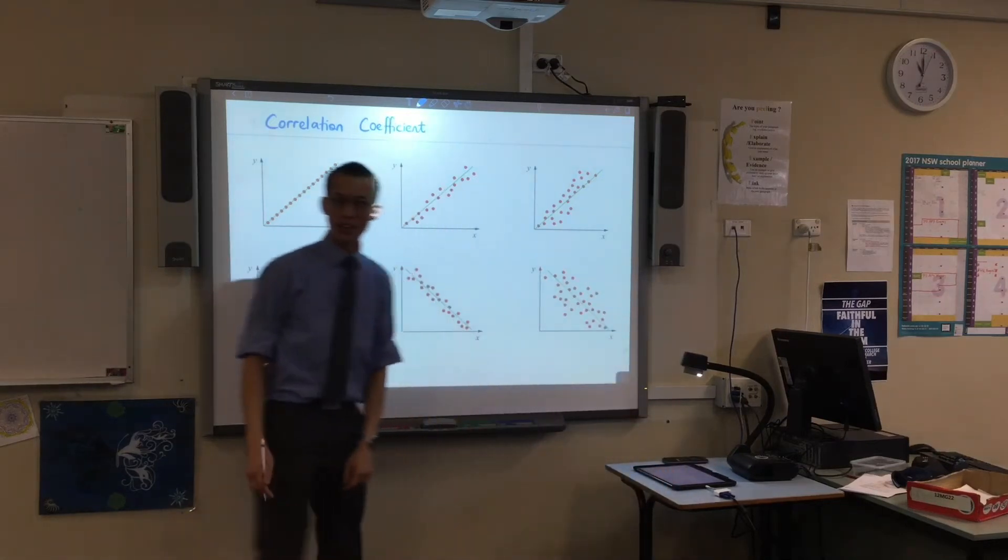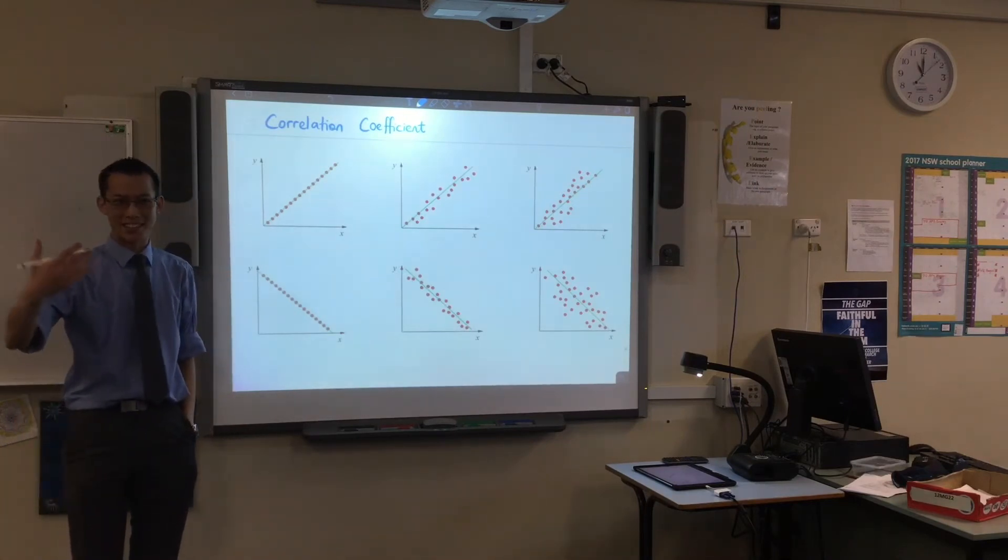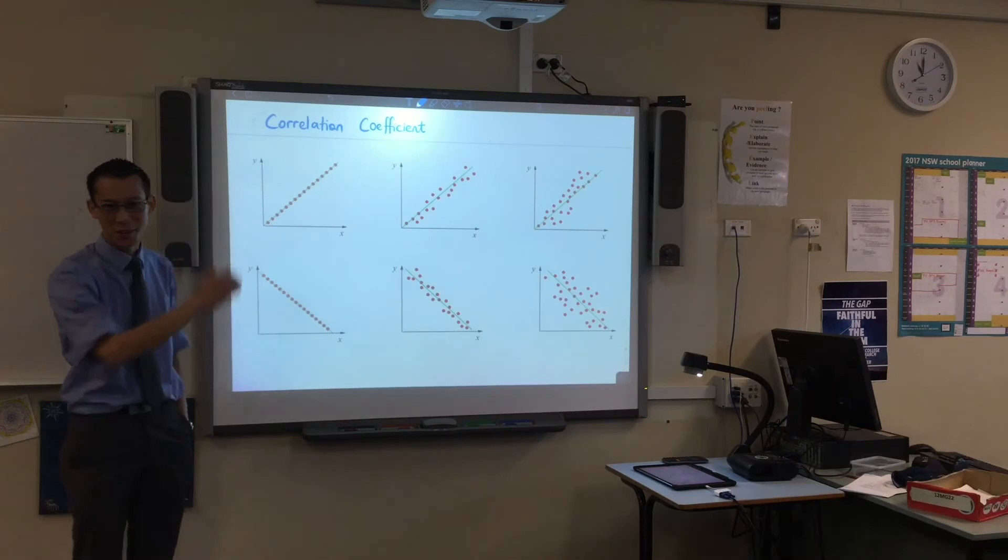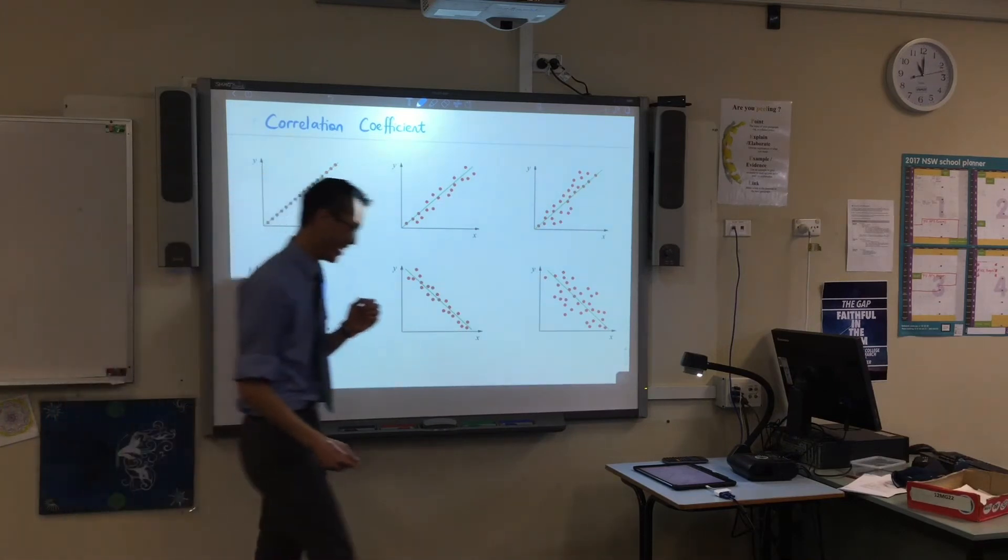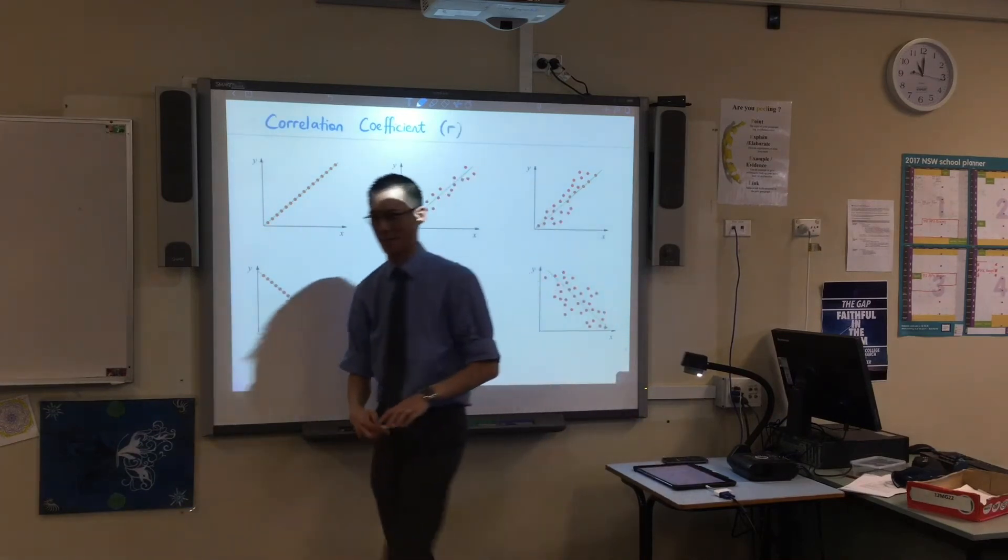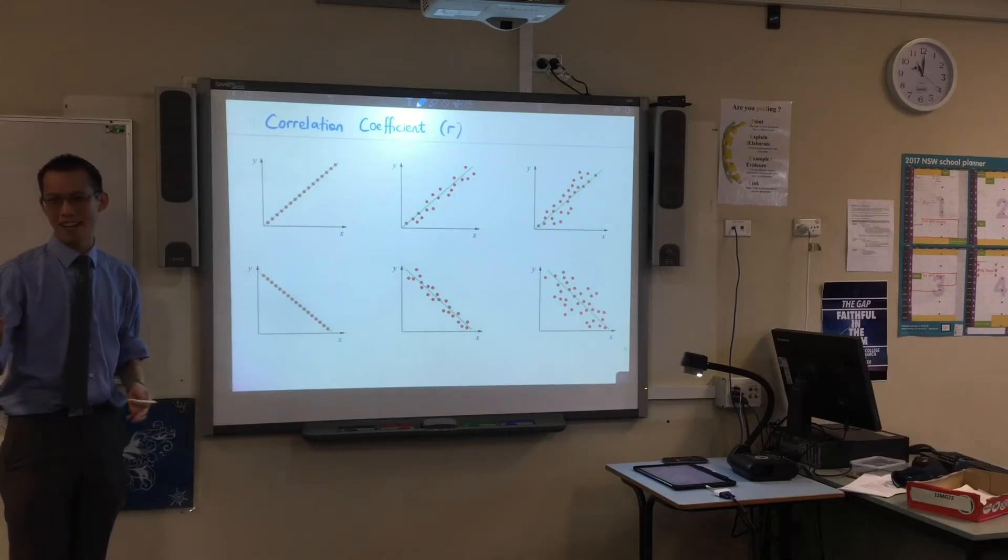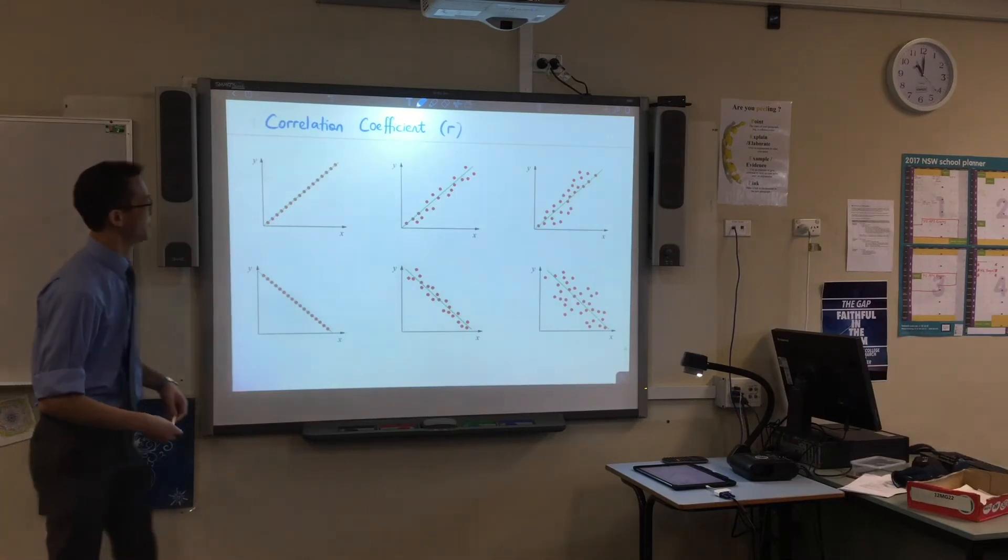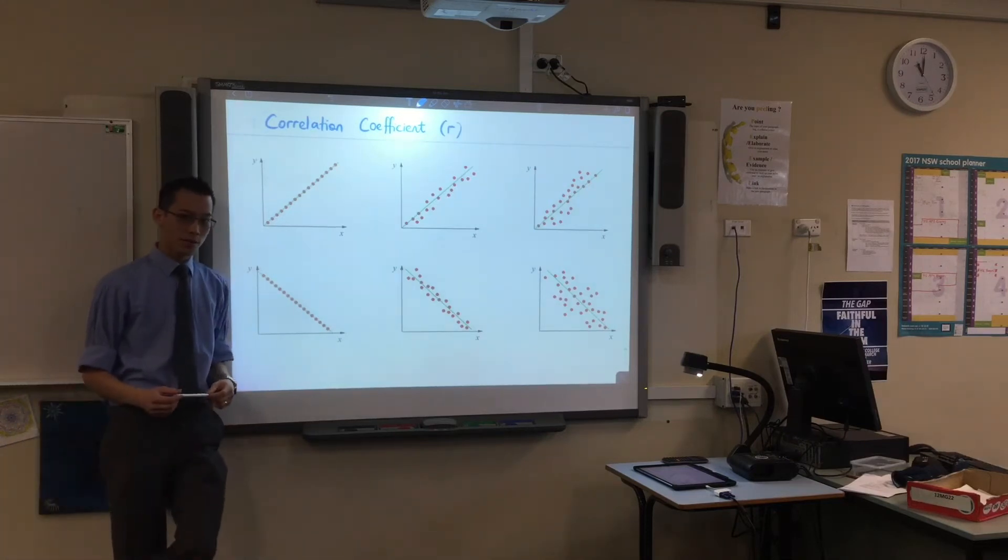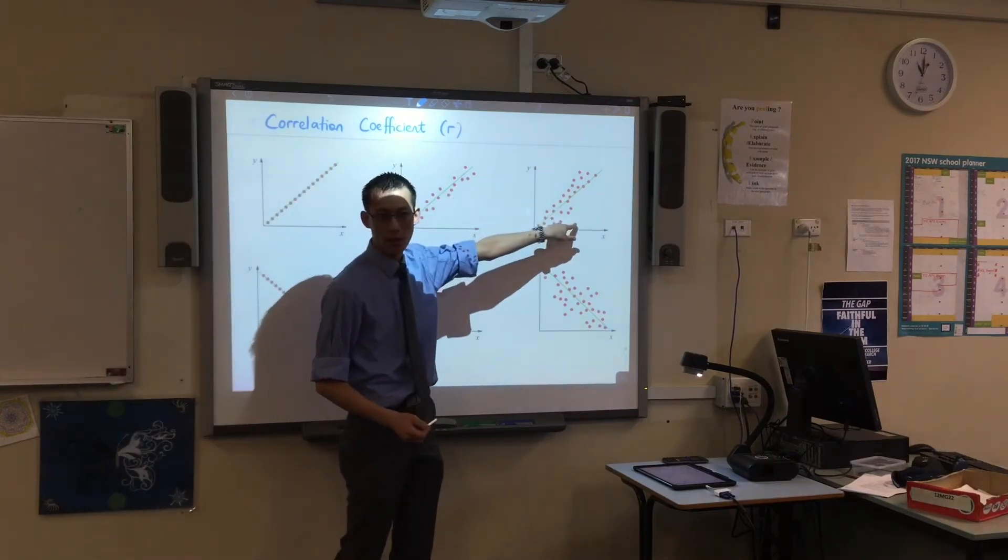So when we talk about correlation the number that's attached to it is called the correlation coefficient. Now with a name like correlation coefficient, a sensible letter to choose to talk about the correlation coefficient. X. Well it's not C, it's R. Don't ask. It's about as good as gradient being M which we've seen before as well. But R you will see over and over again if you do any stats at UD this letter R comes up frequently. This is what they're talking about. Is something closely correlated or is it poorly correlated?